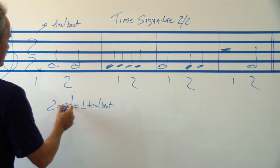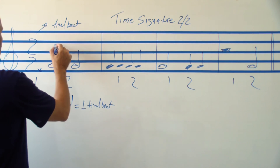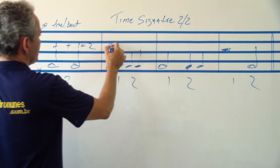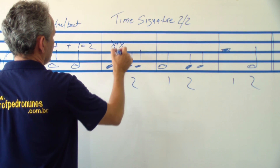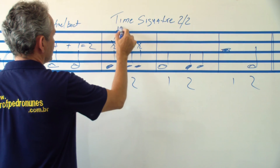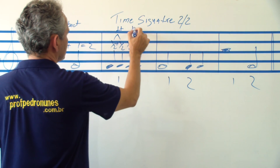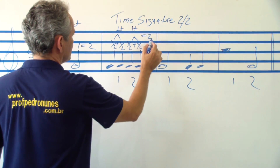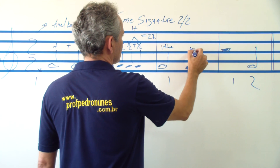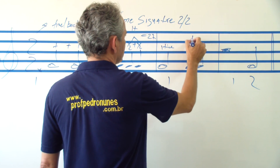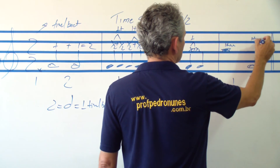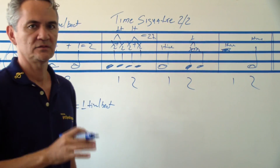So here, the half note is worth one time. So one plus one gives you two. Here, I have a half note — that's one time. And a half plus half is one time, so you have two times total here. And here, one time, and a half plus half gives you one more time. So you have two times total.